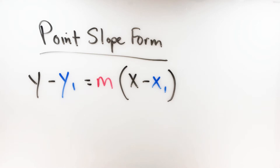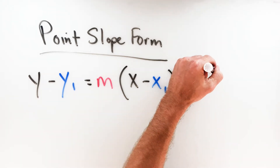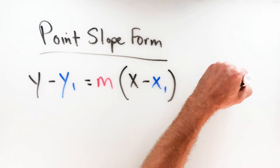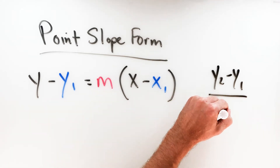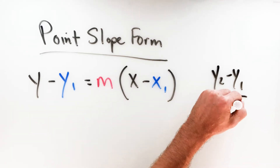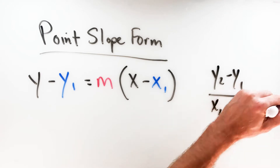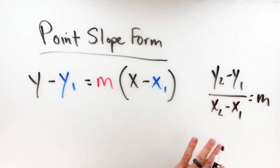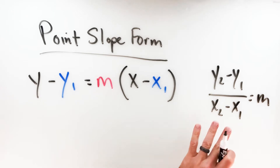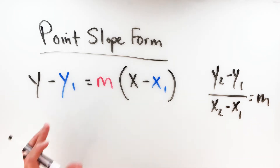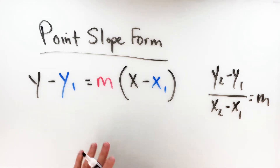This equation comes from the slope formula. The slope formula looks like this: the difference of two y-coordinates over the difference of two x-coordinates, which equals the slope. If you rearrange this a little bit — multiply both sides by x2 minus x1 — you end up with basically the general form of point-slope form. So this whole thing comes from the slope formula.